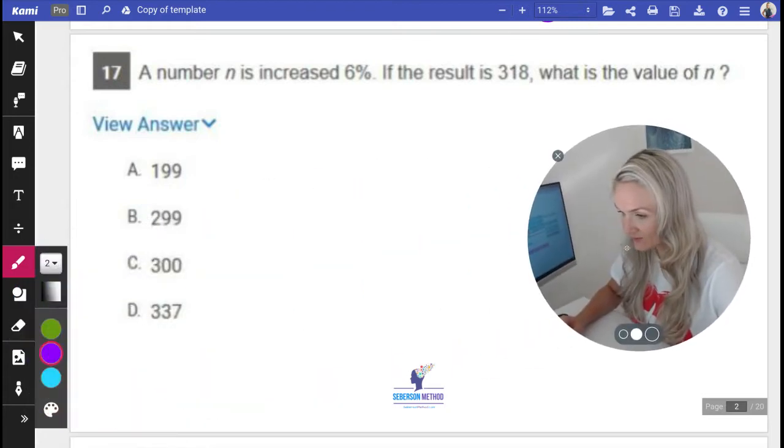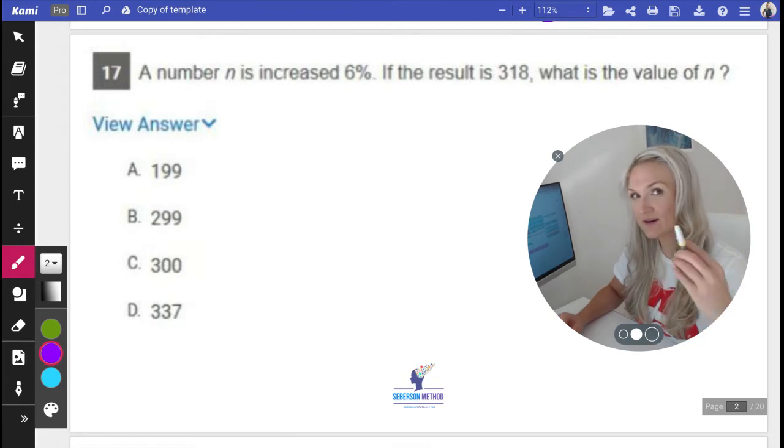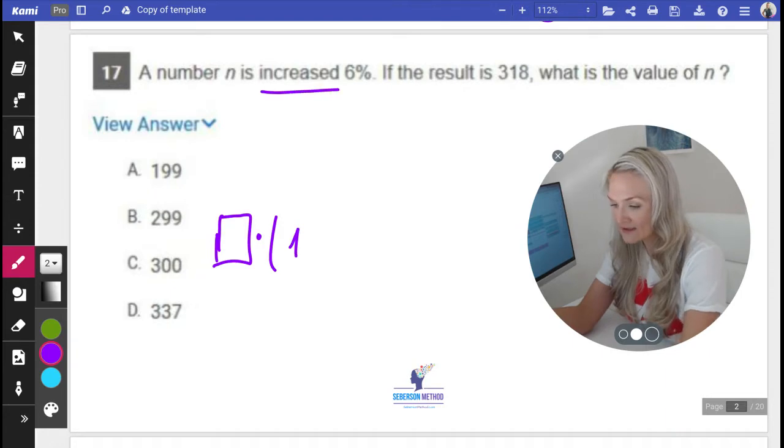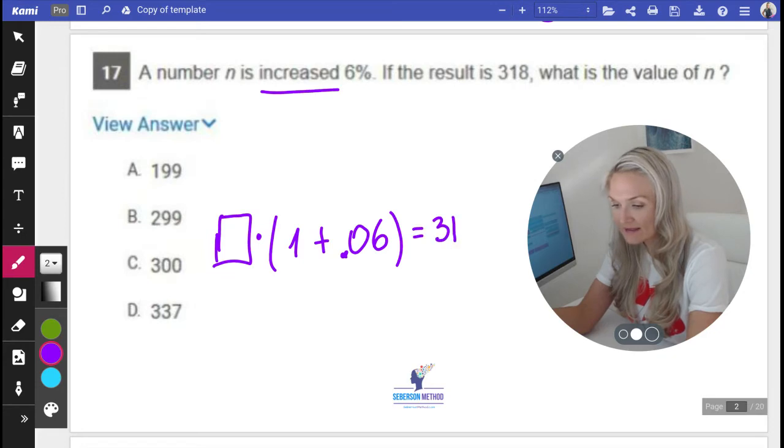Let's look at what is given to us. Remember the three parts of the percent change formula: initial value, percent change, and final value. We don't have the initial value, so the first box is missing, times one. And then it increases, so plus—what is six percent in decimals? 0.06. And what does that equal? It equals 318.